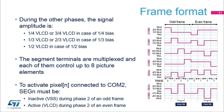Each segment terminal is multiplexed, meaning that each one may control up to eight picture elements depending on the chosen duty rate. For a duty rate of one-fourth, as shown in this example, a single segment terminal is associated with four common terminals, thus allowing the control of four picture elements. The greater the multiplexed rate, the more segment or picture elements you can drive with a given number of segment terminals. For example, to activate a pixel N connected to COM 2, SEGN must be inactive (VSS) during phase 2 of the odd frame and active (VLCD) during phase 2 of the even frame. A pixel is active if the corresponding SEGN line has a voltage opposite that of the COM line, here COM 2, and inactive when the voltages are equal. As a result, the voltage applied between COM 2 and SEGN is plus VLCD during phase 2 of the odd frame and minus VLCD during phase 2 of the even frame.